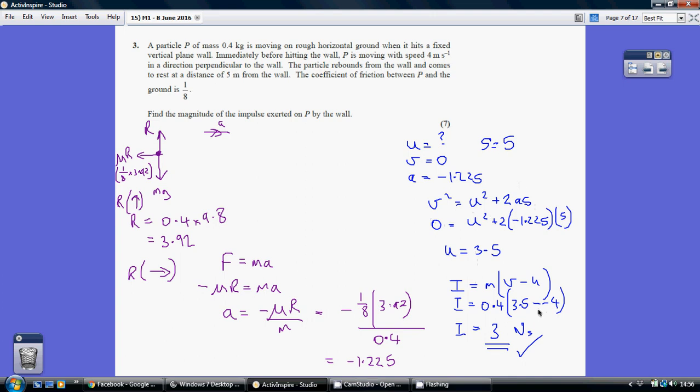So that's why we're minusing a minus. Using my diagram here, for my impulse, I'm going left to right. So my final velocity is 3.5, but then my initial velocity would have been going right to left, so that's going to be my minus 4. So it's 3.5 minus minus 4, so my impulse is 3 newtons.